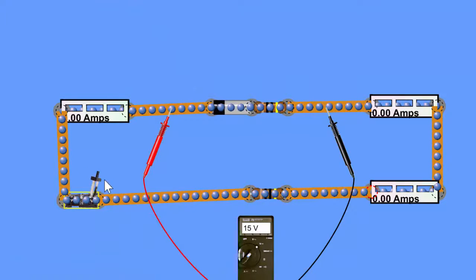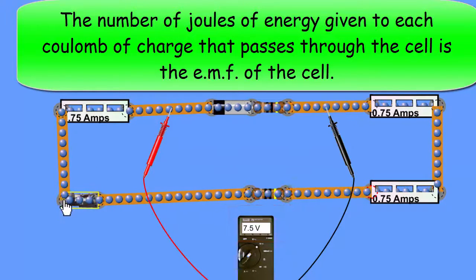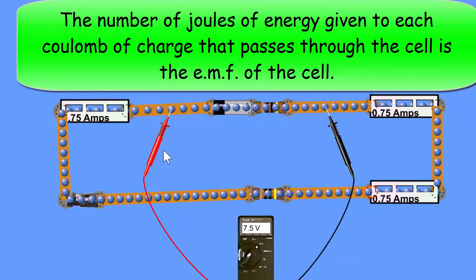So since it's nearly infinite in its resistance, it takes nearly, percentage-wise, all of the joules per coulomb of energy delivered by the cell. So in fact, what you're reading is the EMF, the definition of EMF being the number of joules of energy given to each coulomb of charge that pass through the cell.